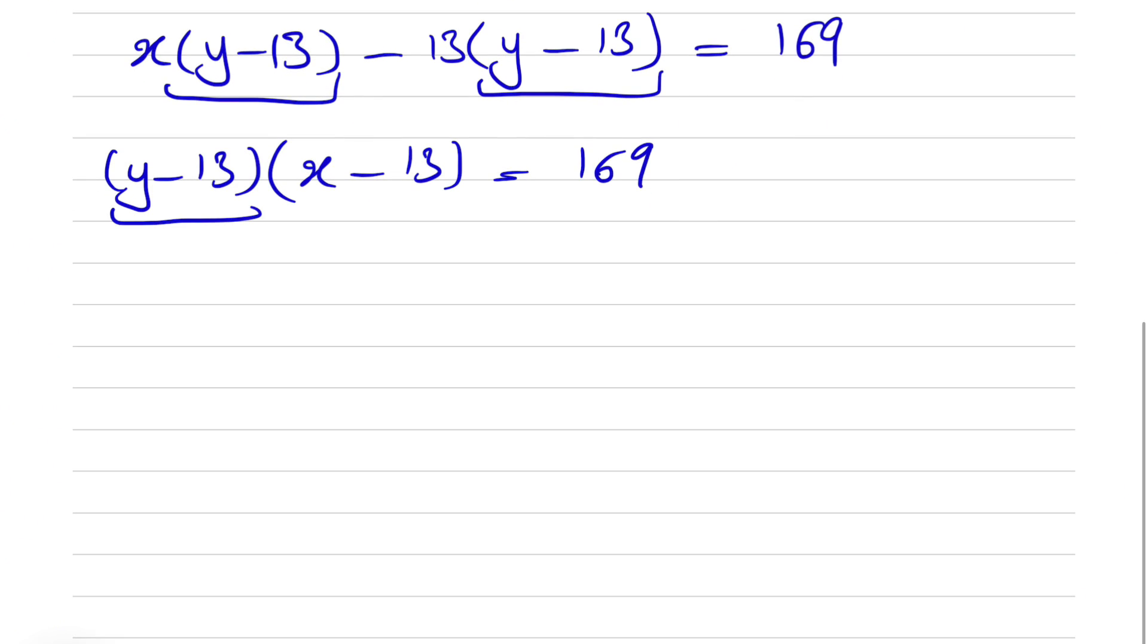Now we have multiplication of two different variables, A times B is equal to 169. And we're going to go over all the scenarios that might happen to get this 169. So we can get 1 times 169, we can get 169 times 1, or we can have 13 times 13. So let's go with each of these. So we have three different scenarios.